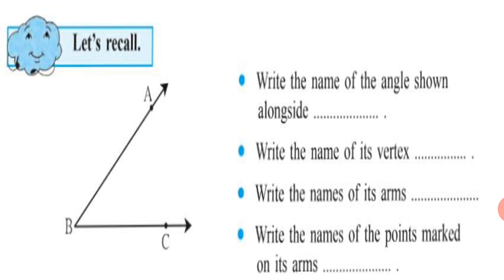Remember, always start the name of the ray — which are the arms — from the vertex, that is B. So BA and BC are the names of its arms. The names of the points marked on its arms are Point A, Point B, and Point C.